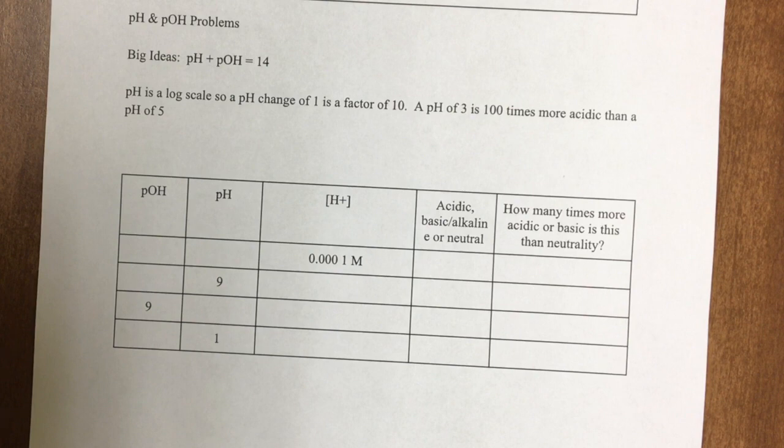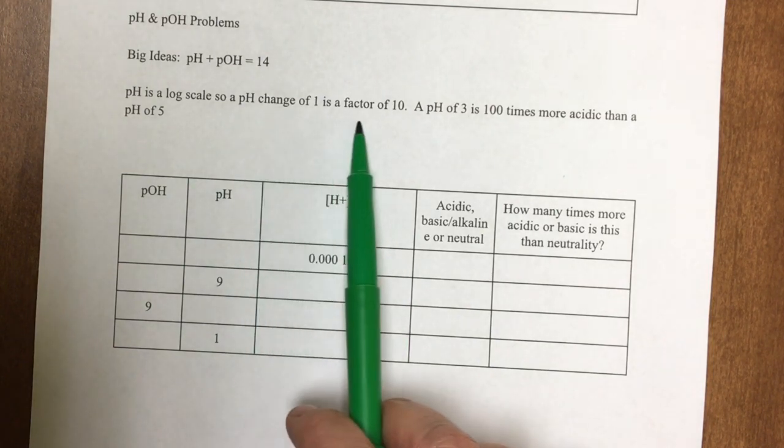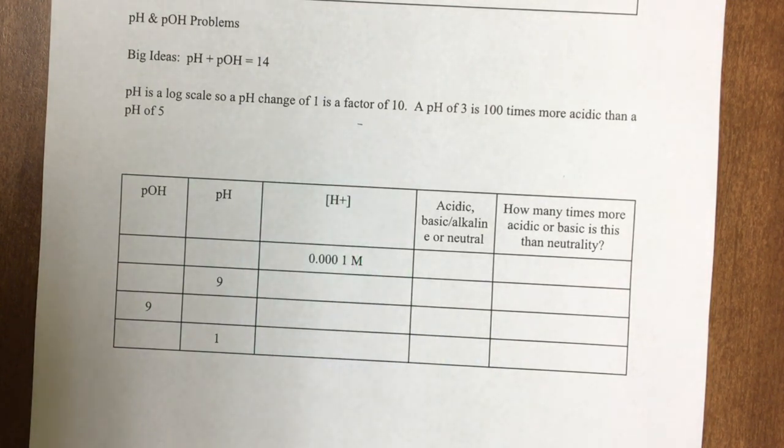This is similar to a Richter scale. An earthquake of magnitude 7 is 10 times greater than an earthquake of magnitude 6 because it's a log scale. The same basic concept applies to pH. A change in pH of 1 is actually a change by a factor of 10.